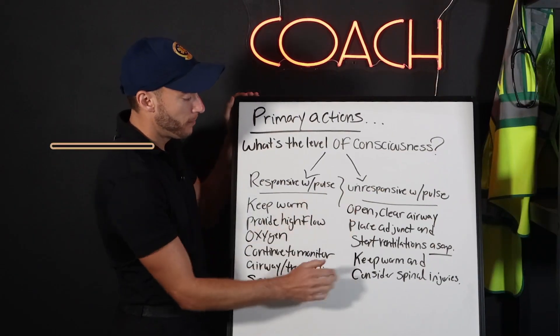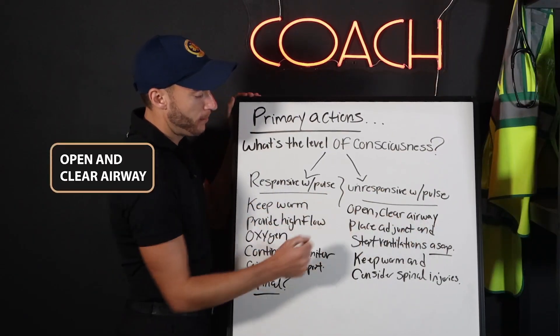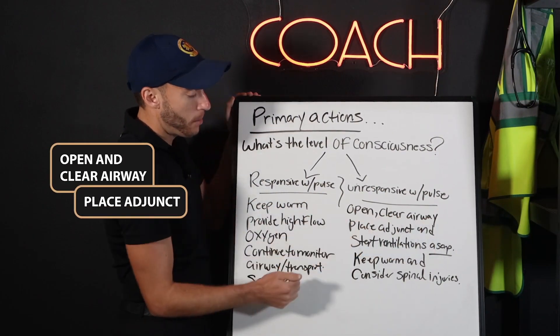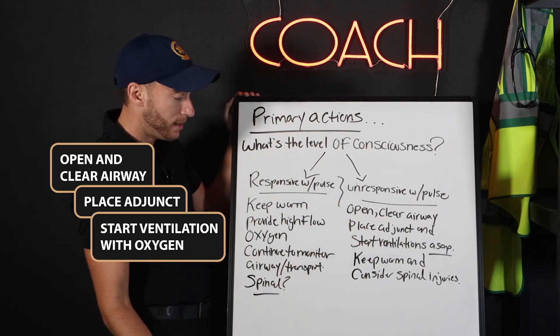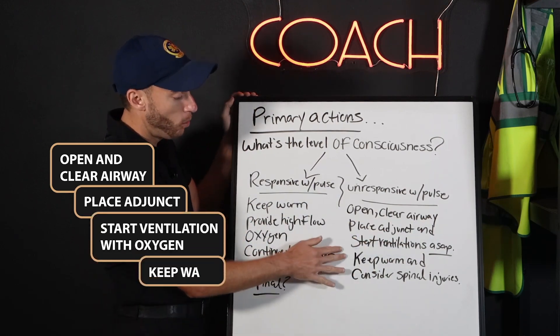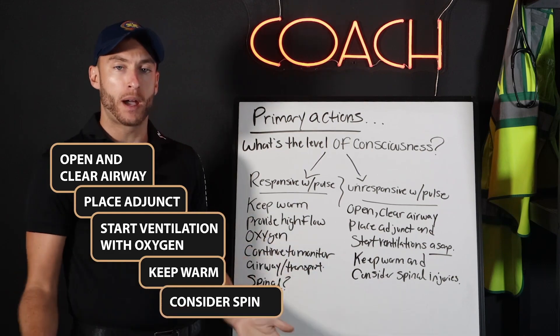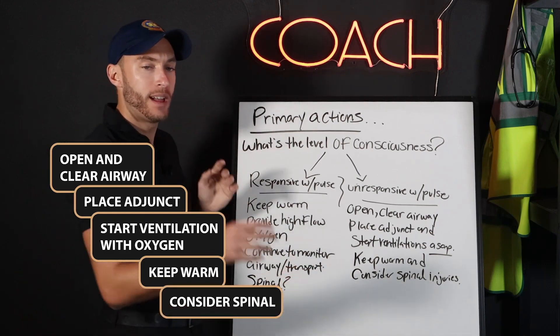We're going to open and clear the airway. We're going to place an adjunct and start ventilation with oxygen immediately. We're going to keep them warm, and again, consider spinal precautions. These are our big things here.